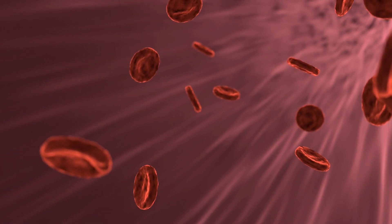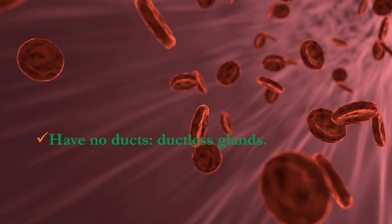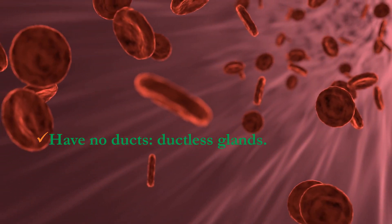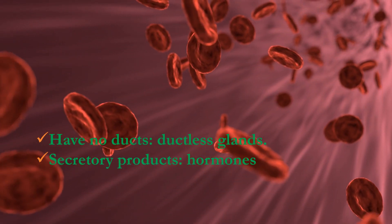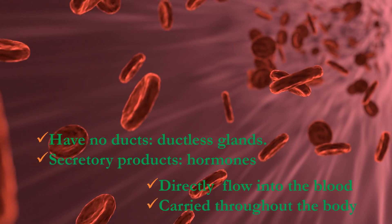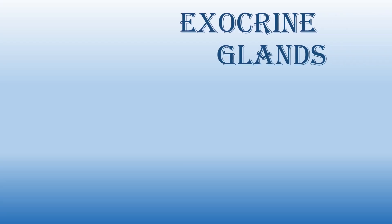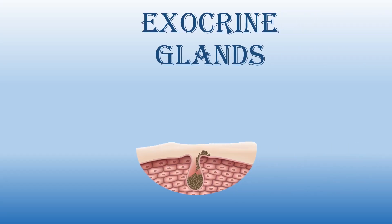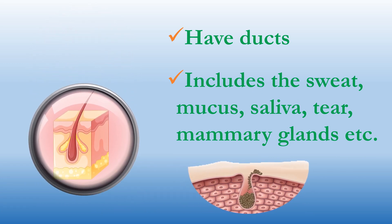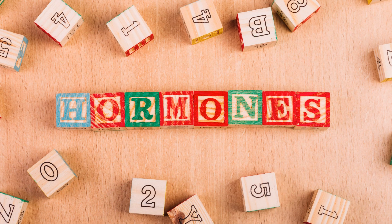Endocrine glands do not have a duct to carry their product to the surface, so they are called ductless glands. Their secretory products are called hormones, and they directly mix into the blood and are carried throughout the whole body. Exocrine glands have ducts which carry their secretory products to the surface of the body. These glands include sweat, mucus, saliva, tear, and mammary glands.